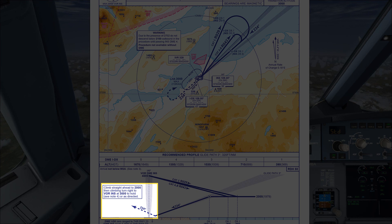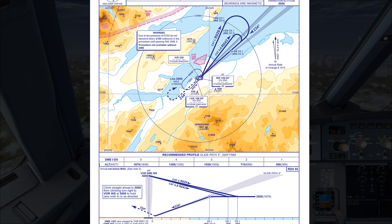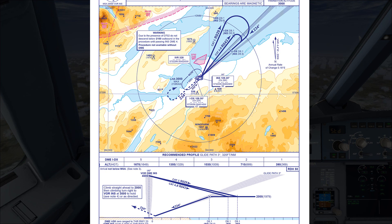It says 'or as directed' at the end, meaning in a go-around you may also receive instructions from air traffic control — they might tell you to turn in a particular direction or climb to a certain height. With a go-around you can either follow what's called the published procedure, which is the procedure on the approach charts, or you will be vectored — meaning given instructions by air traffic control.